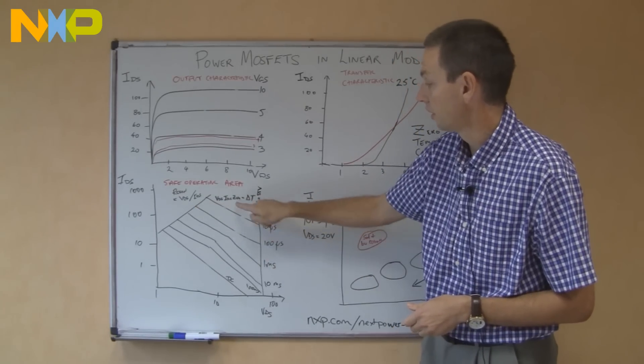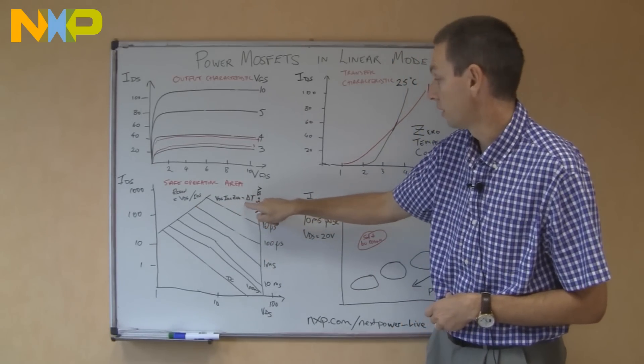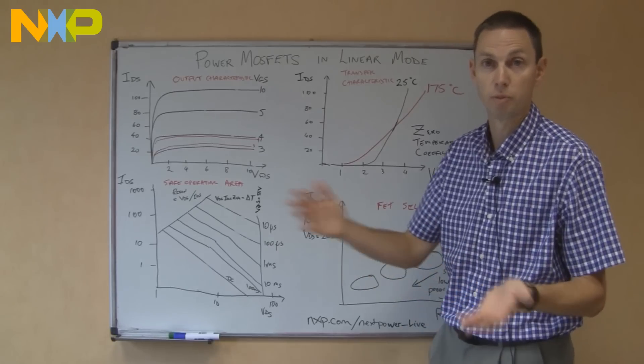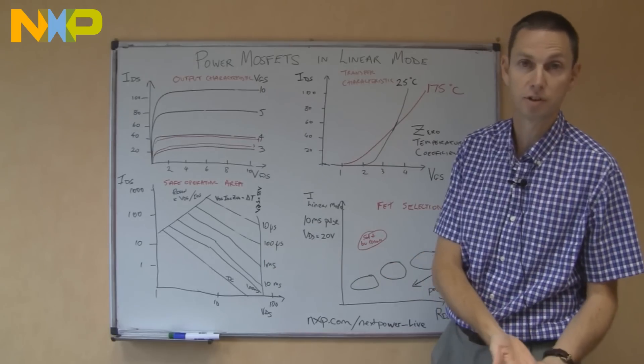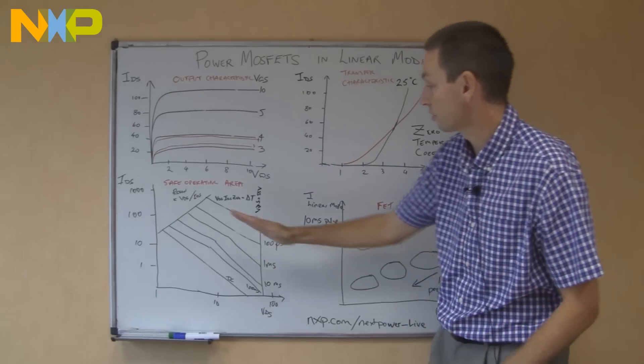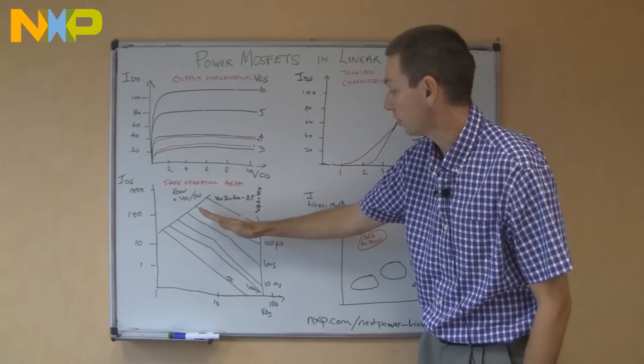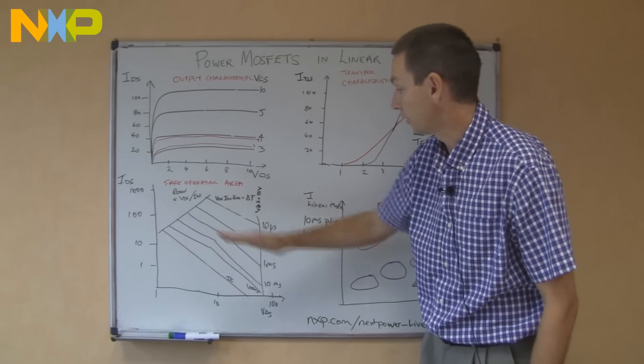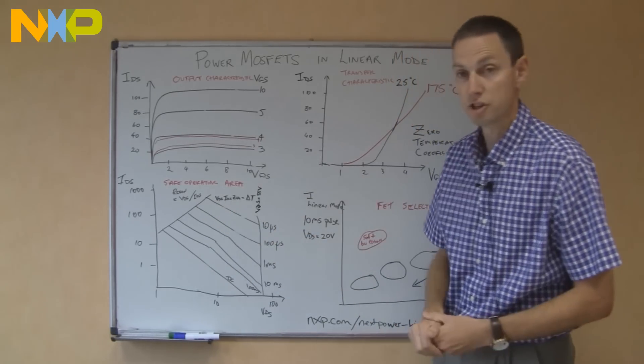So the upper limit is just a straight line that's given by a very simple formula. The voltage times the current times the transient thermal impedance is equal to the change in temperature. Normally for a MOSFET, we allow it to change by 150 kelvins, from 25 degrees Celsius to 175 degrees Celsius. So at very short pulse lengths, we just get a straight line, and the voltage is inversely proportional to the current.